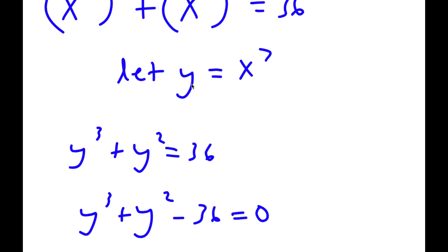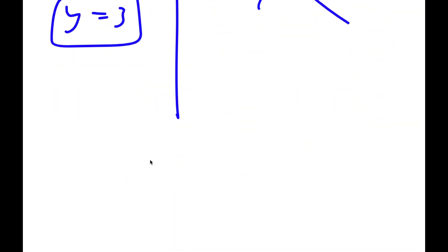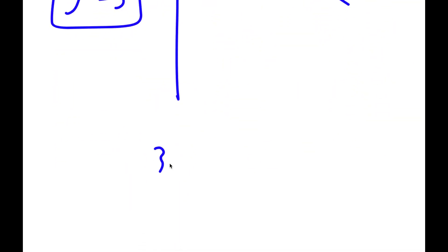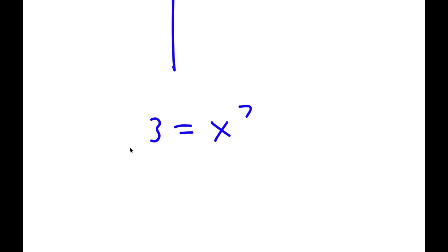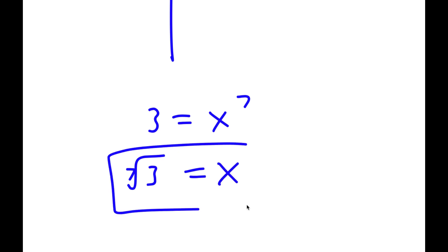The only solution for y is y equals 3. Going back, we let y equal x to the power of 7. So we know y equals 3, meaning 3 is equal to x to the power of 7. All I have to do is take the 7th root on both sides, and I get the 7th root of 3 is equal to x. So this is my answer.